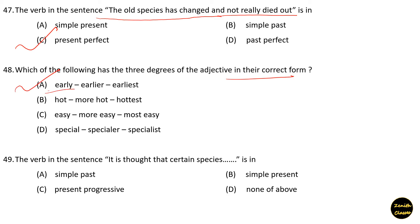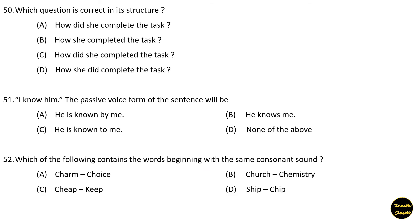Next question: The verb in the sentence 'It is thought that certain species...' is in — simple past, simple present, or none of the above? Option B is the correct answer: simple present. Next question: Which question is correct in its structure? Option A is the correct answer: 'How did she complete the task?'